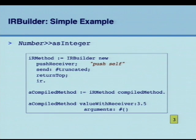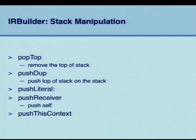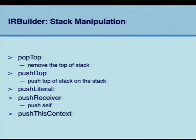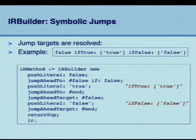What does the IR builder abstract away? It handles the problem of dealing with indexes — which is 1, which is 0 — and all the jumps. Jumps go to specific named labels, not to 'jump to position 100 something'. So it's much simpler. We have pop top, push temp, push literal, push receiver, and push this context. A similar example: false ifTrue: [true] ifFalse: [false]. Push literal false, jump ahead to label 'false', push literal true, jump ahead to 'end', target 'false' pushes false, then jump ahead and return top.